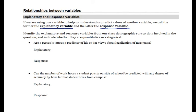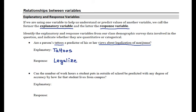In this example, we're asked: are a person's tattoos a predictor of his or her views about legalization of marijuana? We're talking about tattoos predicting views of legalization, so our explanatory variable is tattoos. Our response variable would be views about legalization of marijuana — or the variable name legalize. What we're really after is identifying the quantity that's measured, not necessarily knowing the exact variable name.